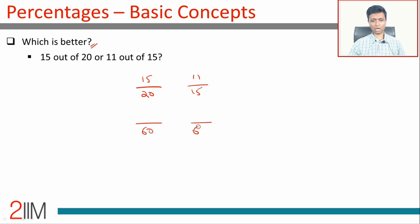So write both of these on a per 60 basis. 15 by 20 is 45 by 60. 11 by 15 is 44 by 60. This is greater than this. So comparing 15 out of 20 and 11 out of 15, we just take the LCM, simplify, and find out which is better.